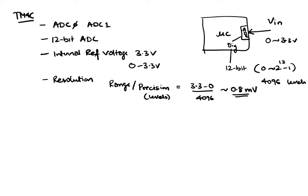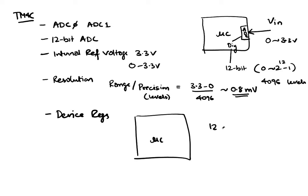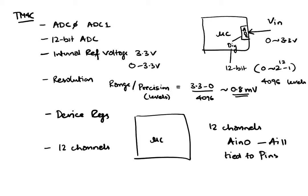The other thing we want to understand about our ADC is that it has internally some device registers. More importantly, our microcontroller has 12 channels. In other words, there are 12 pins — 12 channels — and these channels are called analog channels. They are called AIN0 through AIN11. These channels are tied to pins, actual port pins.